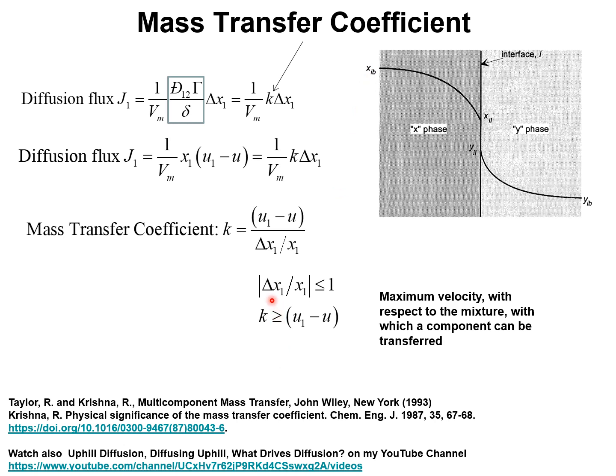Now, the magnitude of delta X1 divided by X1 should be less than unity and therefore it follows that the mass transfer coefficient should be greater than the velocity difference between component 1 and the mixture. The physical significance of the mass transfer coefficient is that it represents the maximum velocity with respect to the mixture with which a component can be transferred from one phase to the adjoining phase.